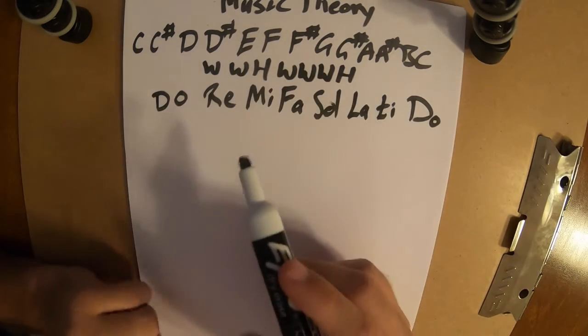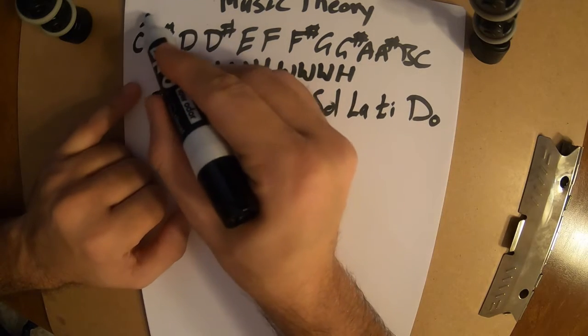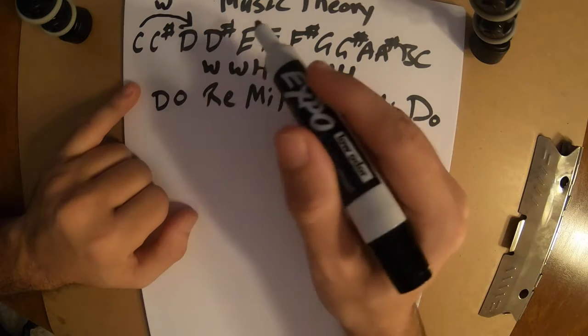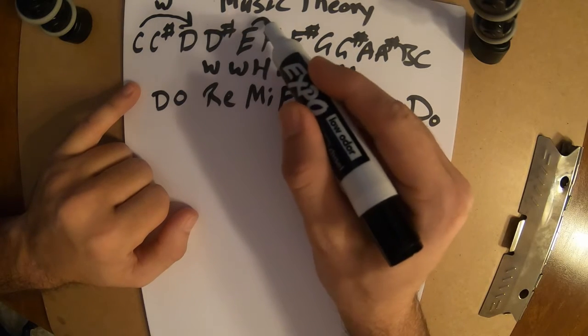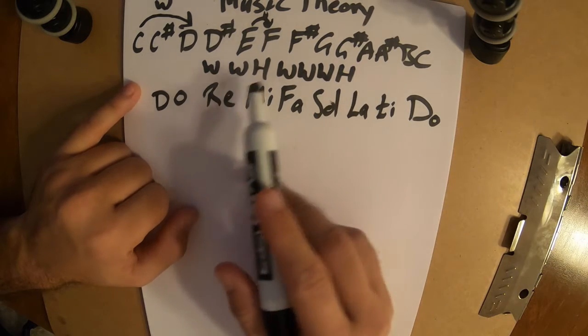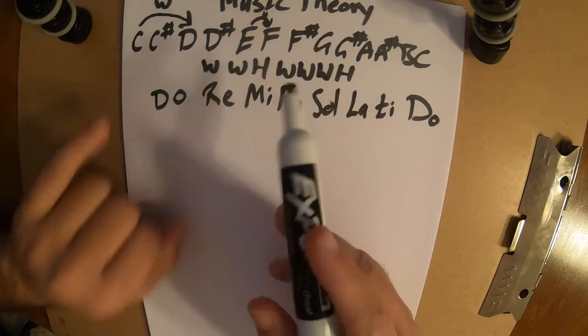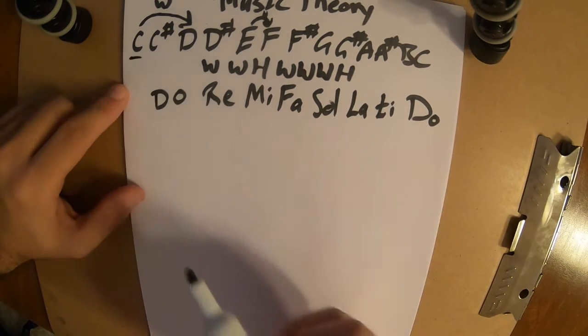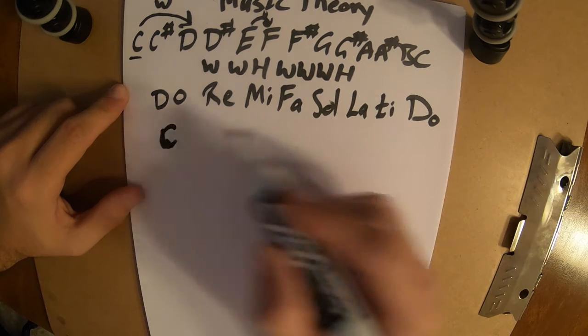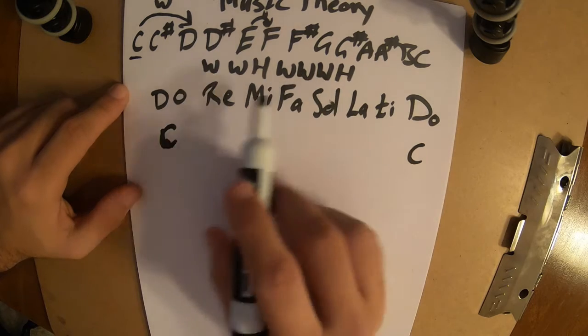is this. So a whole step means that we would jump over a note. So a whole step, for example, might be from C to D. A half step is from E to F. Notes that are adjacent. You just go to the next note. Whole step, you skip a note. So, if C is our main note.